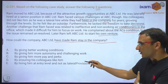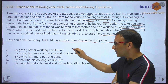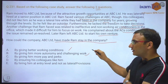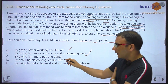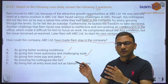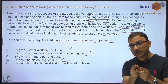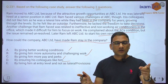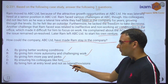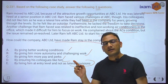This is one of the options: by giving better working conditions, by giving more autonomy and challenging work, by giving him pay and perks, and ensuring that his colleagues like him — sab ko bolte bhai, iske saath roz khelo, lunch saath mein karo — or by hiring him at an entry level and not at a lateral level. If you have understood, how is your Herzberg two-factor theory? Two-factor theory kya kehta hai? There are some factors — I'll come to that.